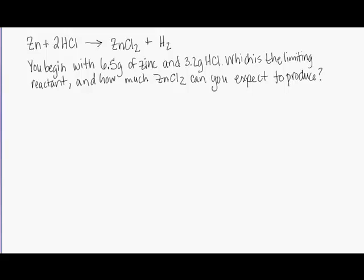For this stoichiometry problem, we'll be doing an example of a limiting reactant problem. Just like every other stoichiometry problem, it starts out with a balanced equation. In this equation, zinc metal is added to hydrochloric acid to produce zinc chloride and hydrogen gas. We're going to begin with 6.5 grams of zinc and 3.2 grams of hydrochloric acid. We want to know which is the limiting reactant and how much zinc chloride we can expect to produce.